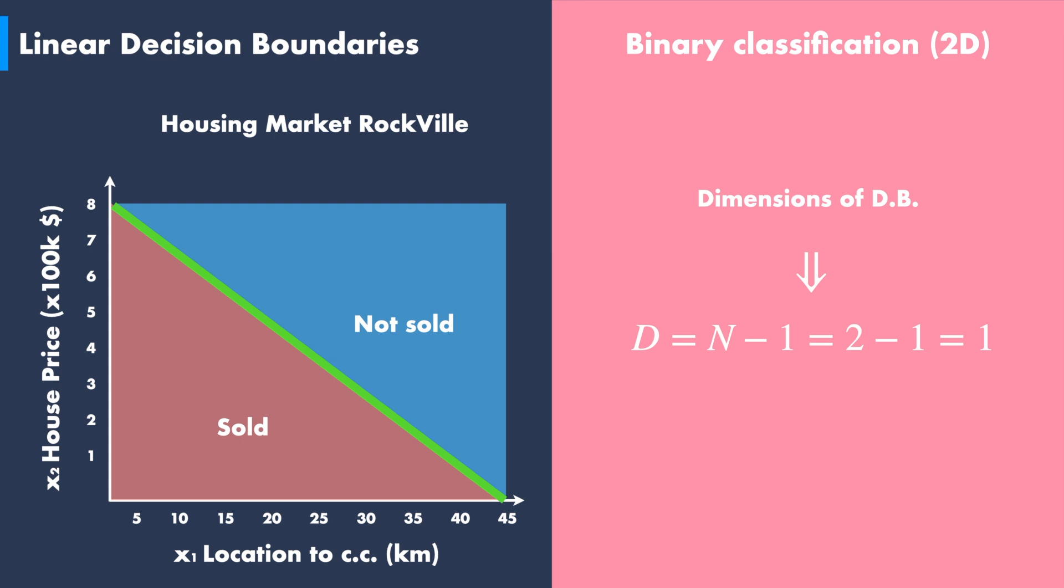d equals 1, which means that the decision boundary is expressed with the formula of a line.